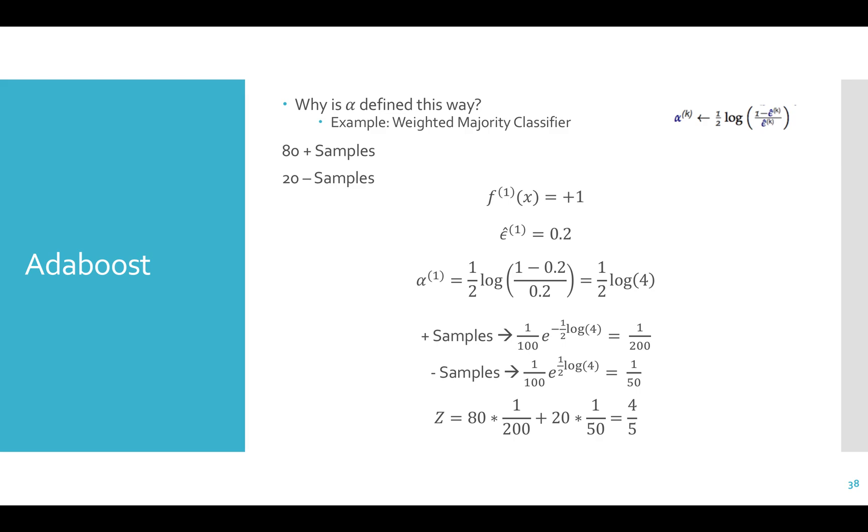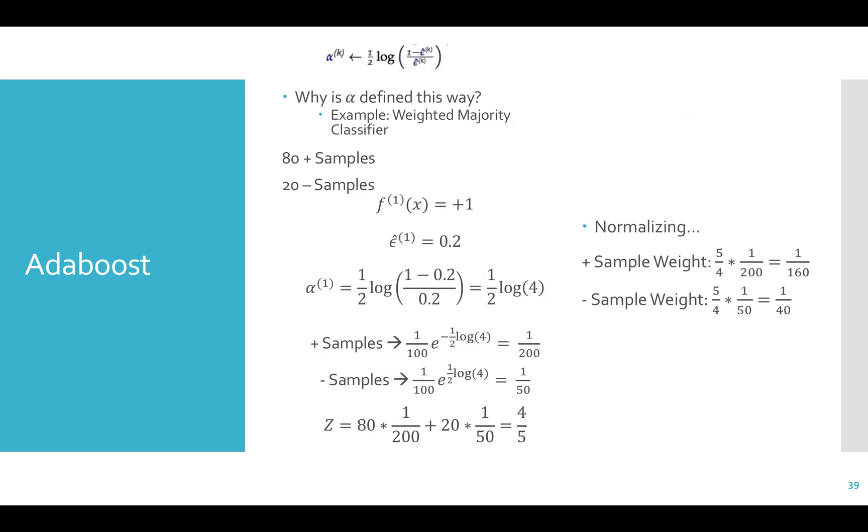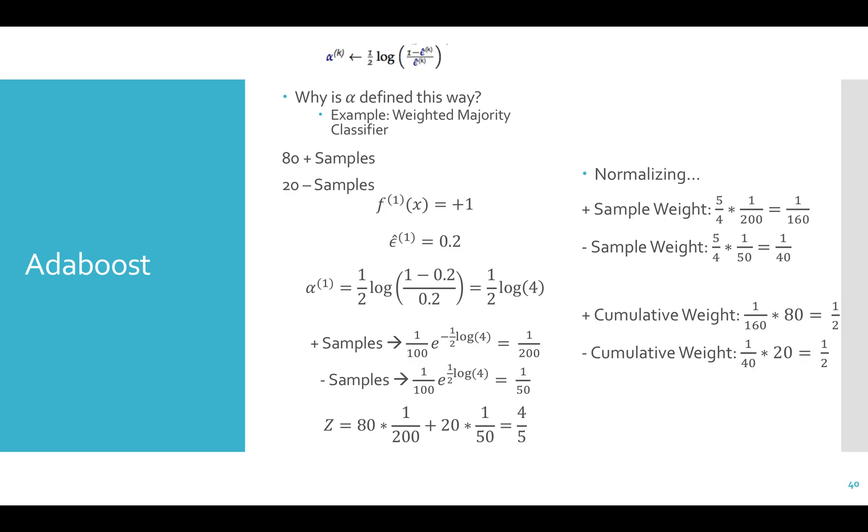We can compute z like this, and therefore, after normalization, the weight distribution on any single positive example is going to be 1 over 160. Remember that we multiply by 1 over z. And the weight on any negative example is going to be 1 over 40.